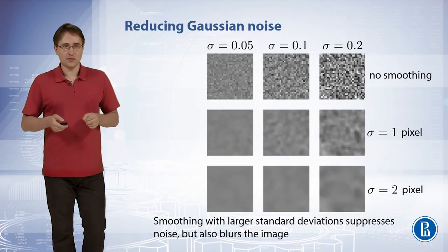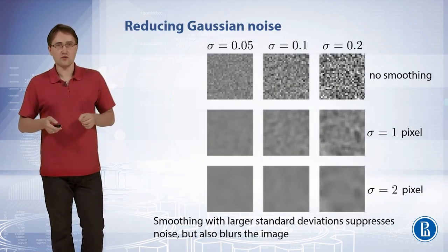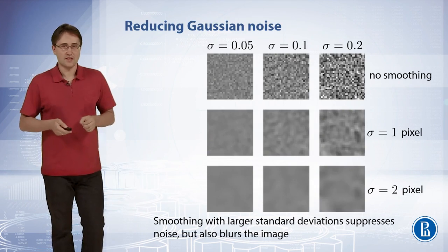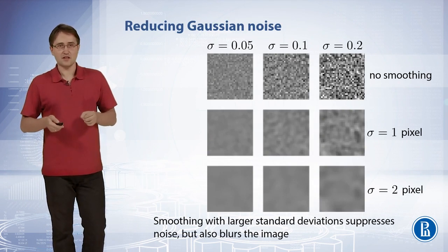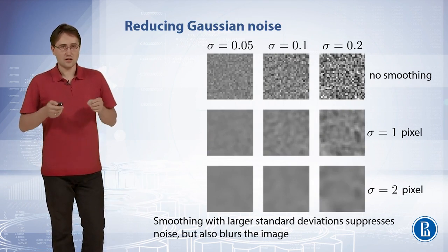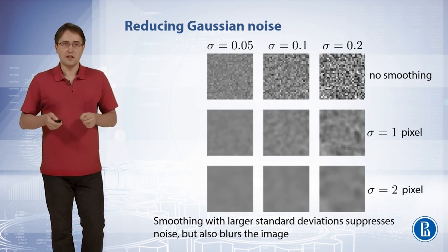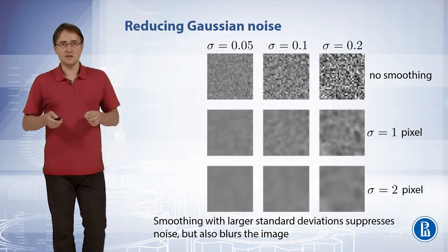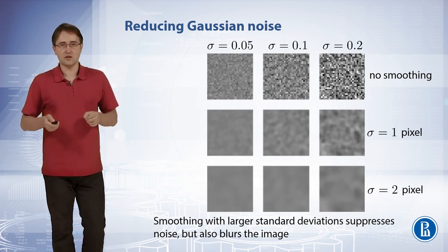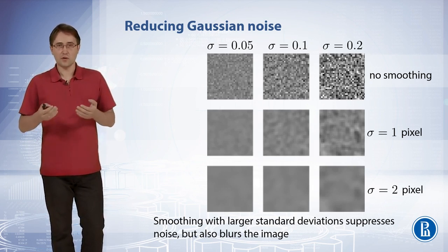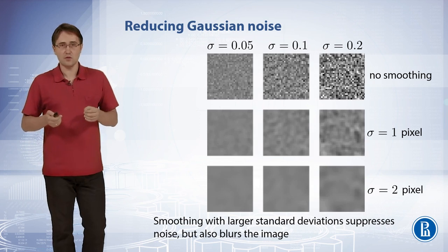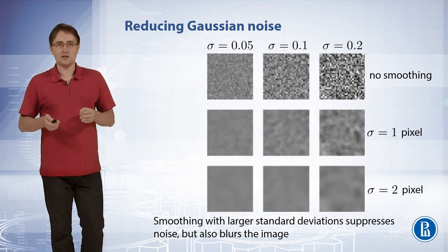Applying a Gaussian filter can reduce noise in an image, but it also blurs the image. The larger the intensity of the noise, the larger the filter kernel should be used to remove the noise. But the larger the filter, the stronger the blur. So it's a compromise between smoothing of the image and reducing the additive noise.